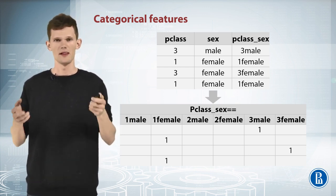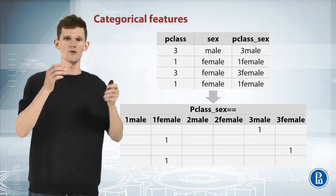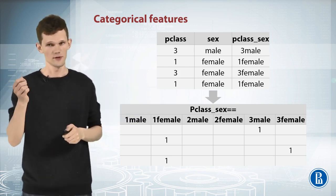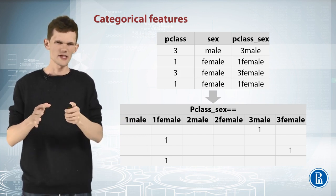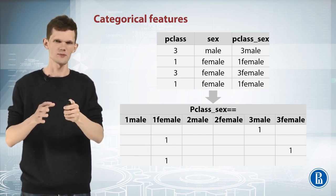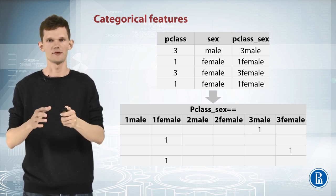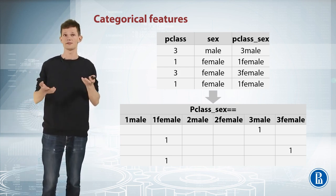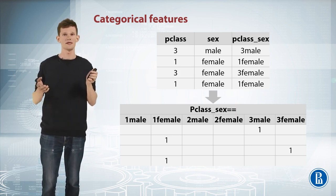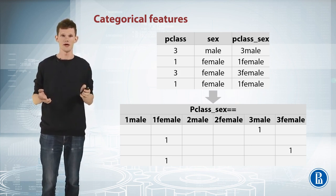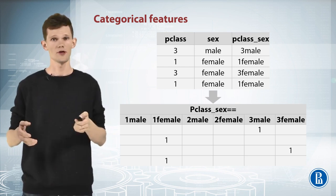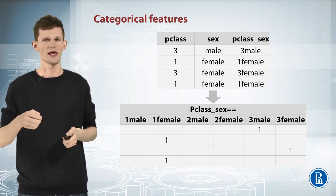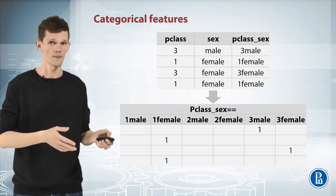For example, let's hypothesize that target depends on both p-class feature and sex feature. If this is true, linear model could adjust its predictions for every possible combination of these two features and get a better result. How can we make this happen? Let's add this interaction by simply concatenating strings from both columns and one-hot encoding it. Now linear model can find optimal coefficient for every interaction and improve. Simple and effective.